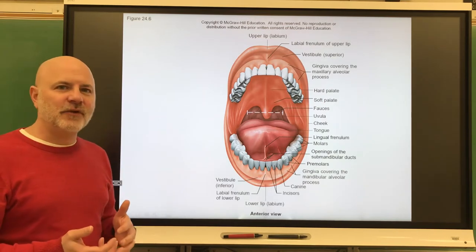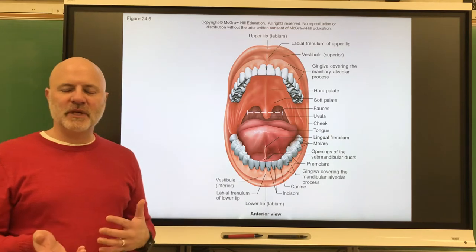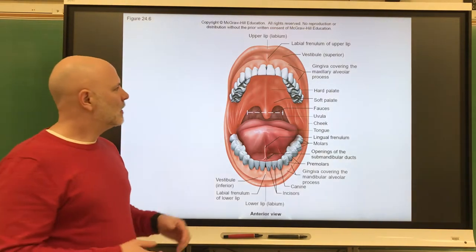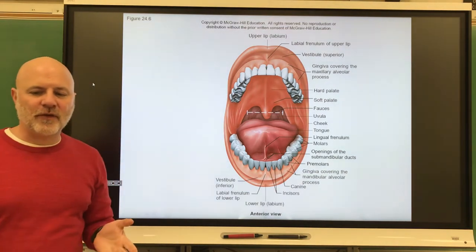That's going to mix the food with the saliva and it creates what is known as a bolus, which is mixed food in saliva. So here right above the mouth is the palate, that is the roof of the mouth.